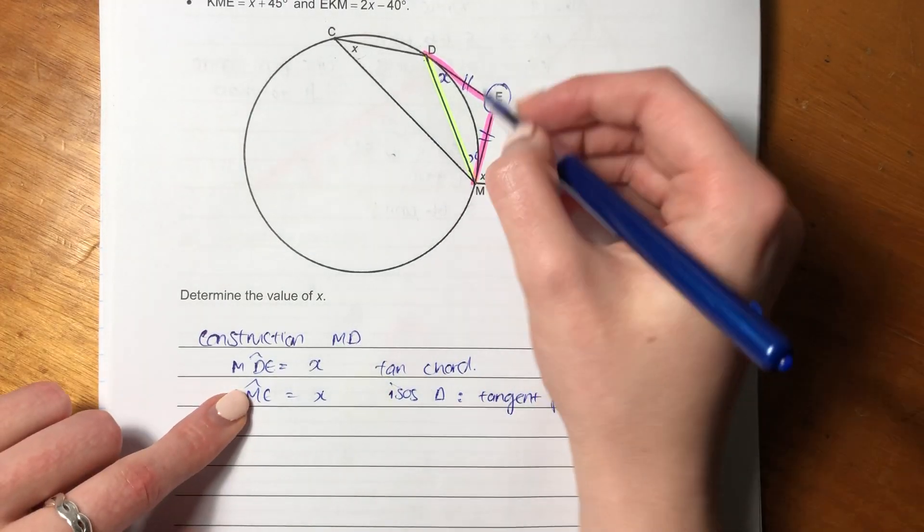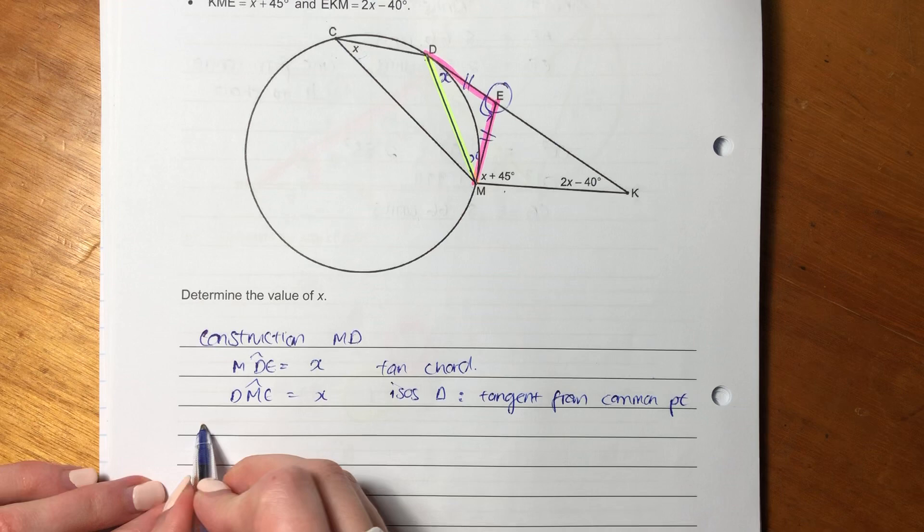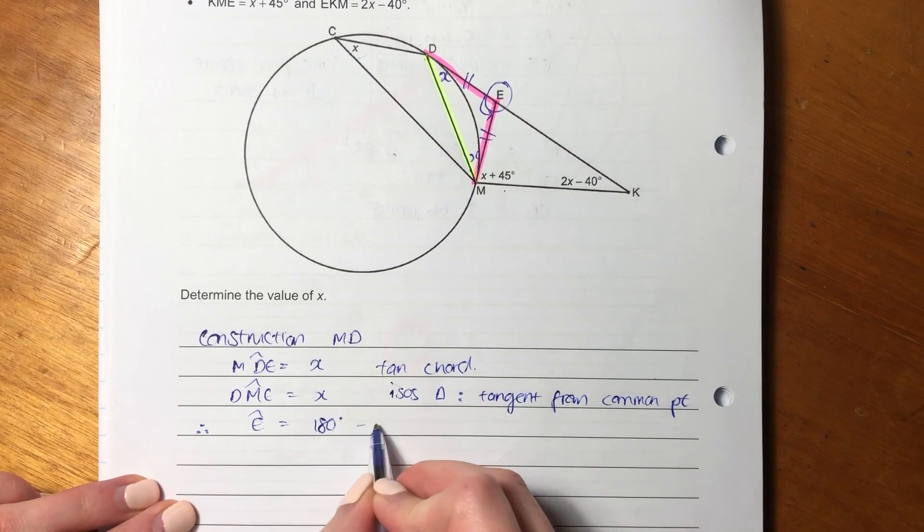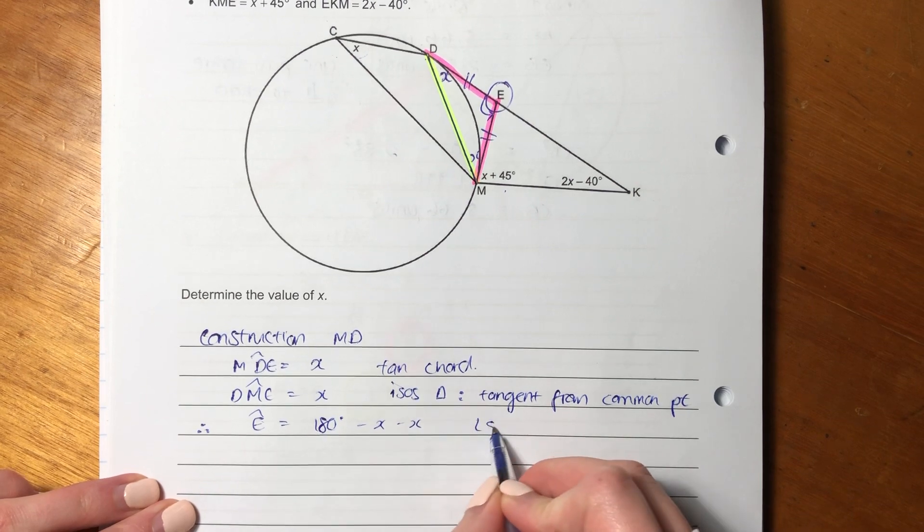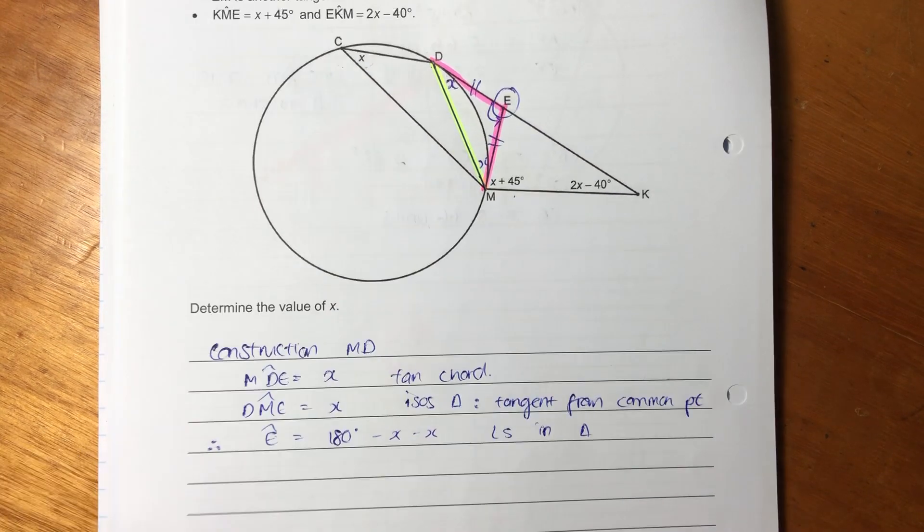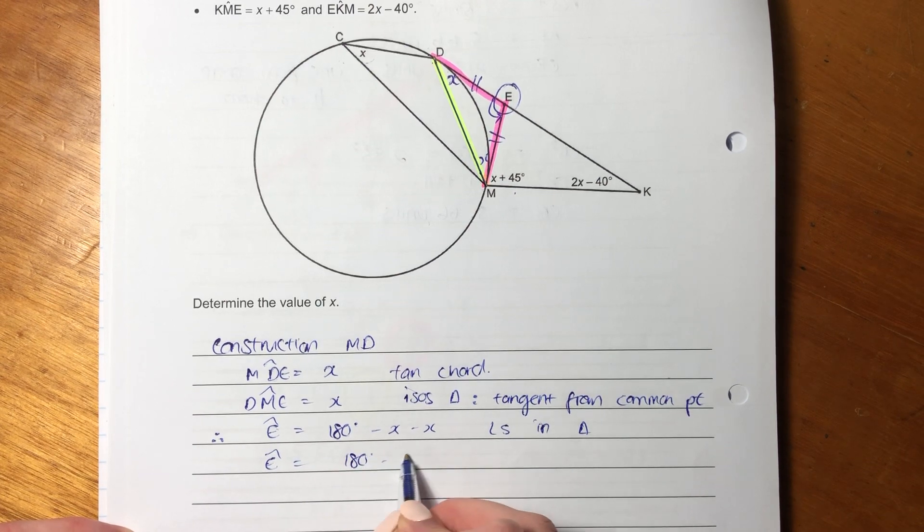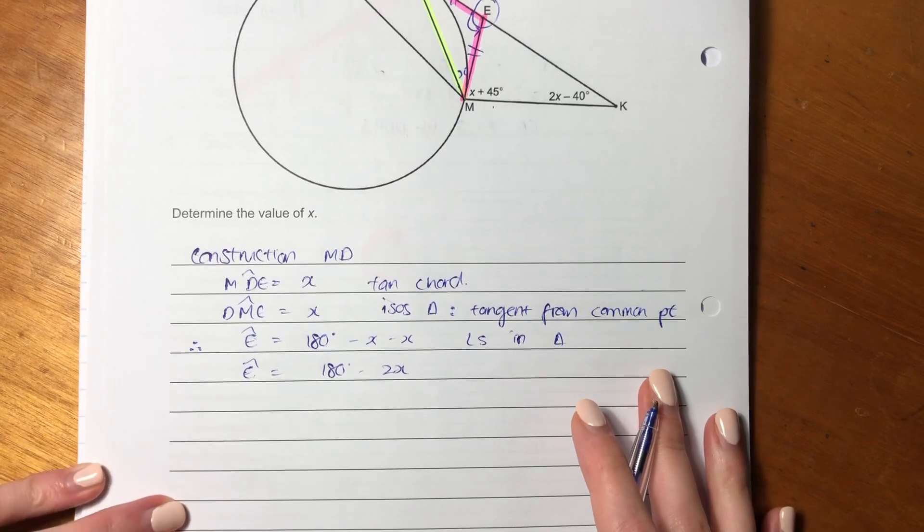So now we can work out what the angle E is. So therefore, the angle E equals 180 minus X minus X because of angles in a triangle. So let's just simplify that.